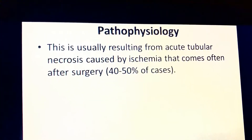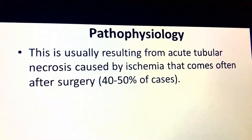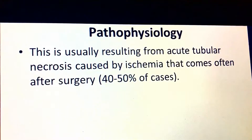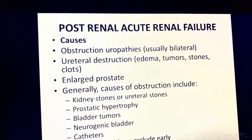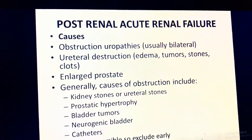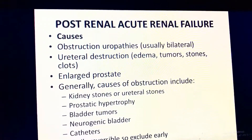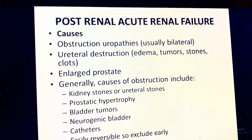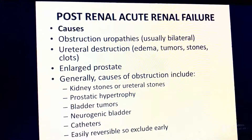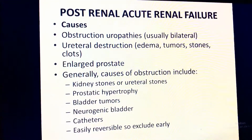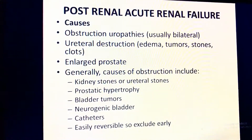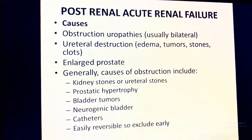Intra-renal failure is usually the result of acute tubular necrosis caused by ischemia that often follows surgery. Post-renal failure causes obstruction bilaterally. Causes of obstruction include kidney stones or ureteral stones, prostatic hypertrophy, bladder tumor, neurogenic bladder, and catheter blockage.